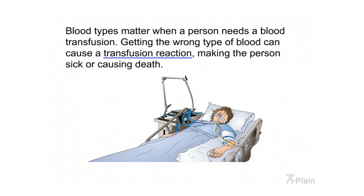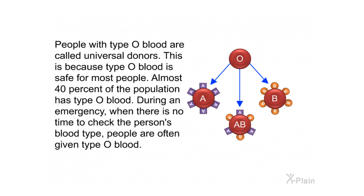Blood types matter when a person needs a blood transfusion. Getting the wrong type of blood can cause a transfusion reaction, making the person sick or causing death. People with type O blood are called universal donors because type O blood is safe for most people. Almost 40% of the population has type O blood.